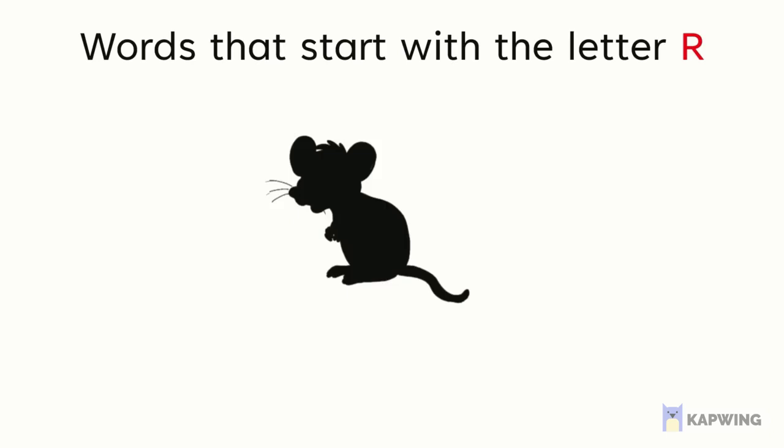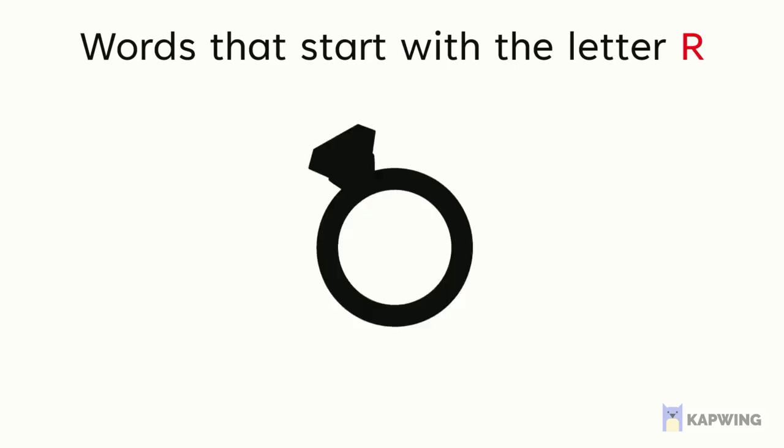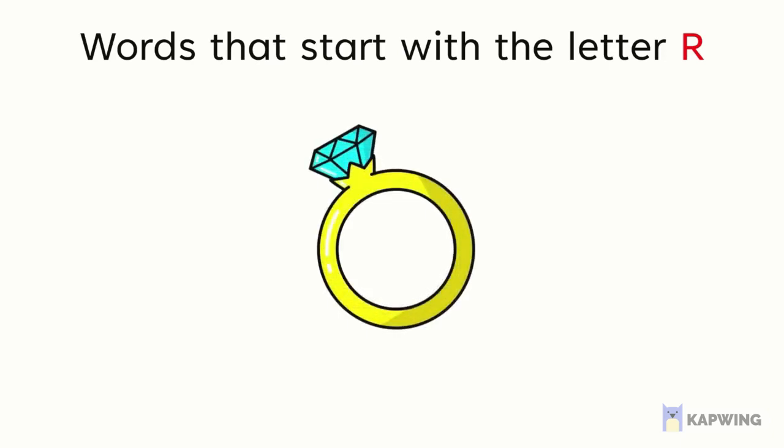Can you guess what this is? It's a small animal that starts with the letter R. It's a rat. Rat starts with the letter R. Can you guess what this is? It's something that starts with the letter R and you can wear it on your finger. You're right! It's a ring. Ring starts with the letter R.